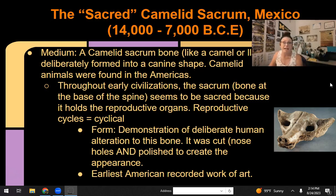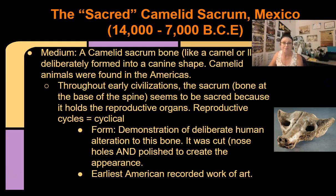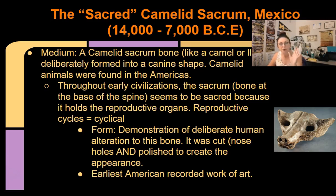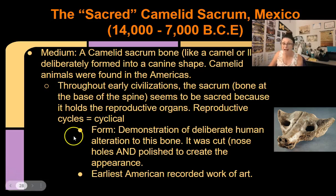These are the four pieces we're covering for paleolithic, prehistoric art — all pre-farming. The next step is to look at what happens to art when people stop moving around and start farming and controlling their own food supply, transitioning into the neolithic period.